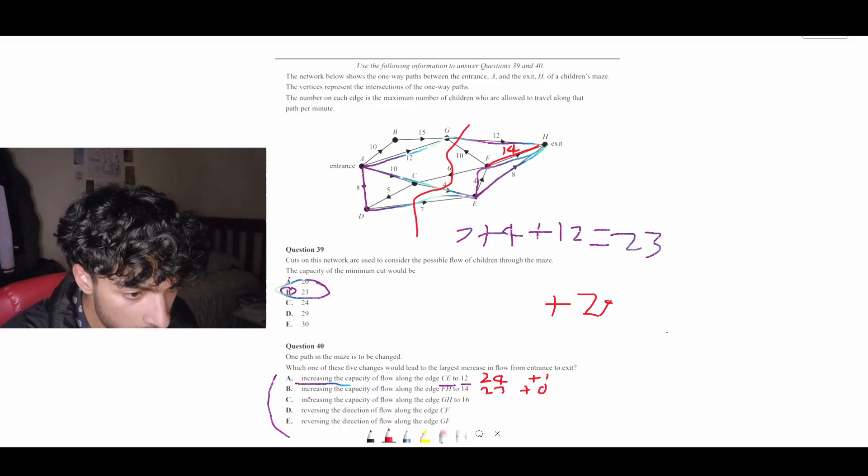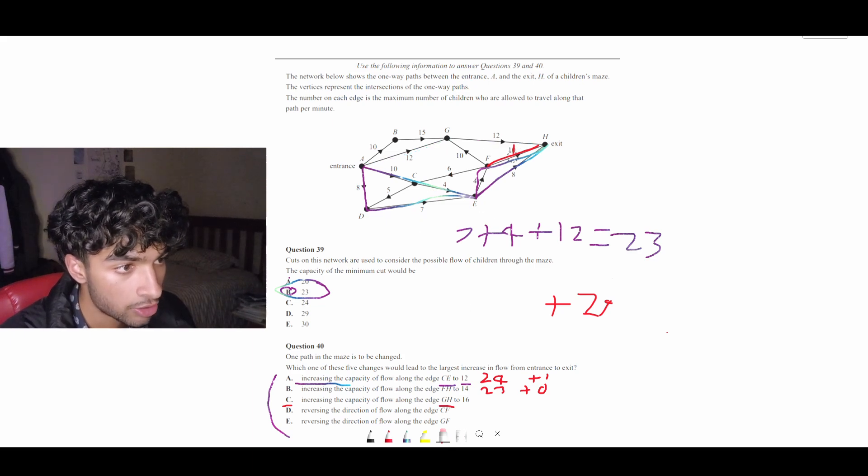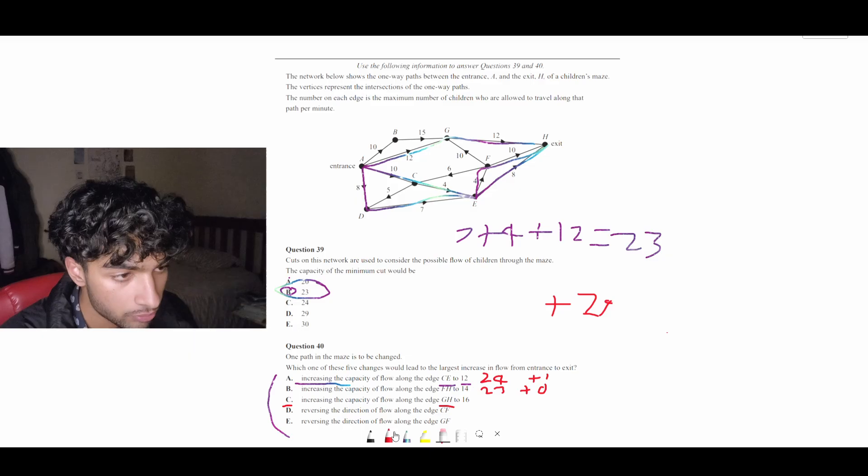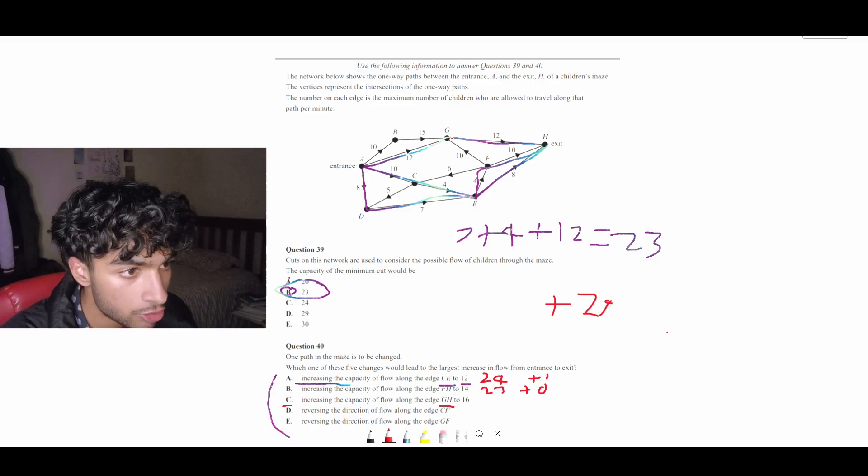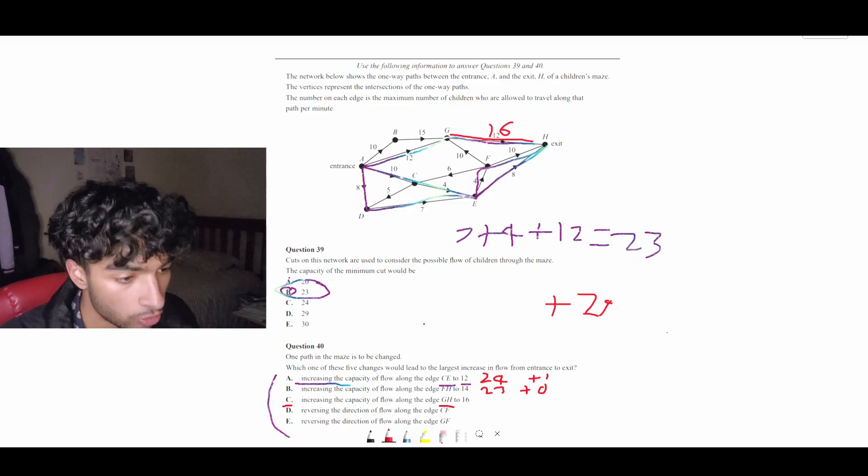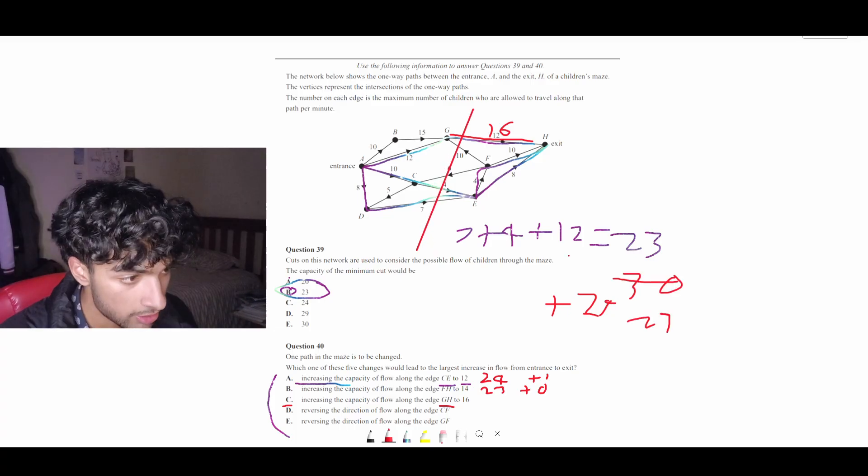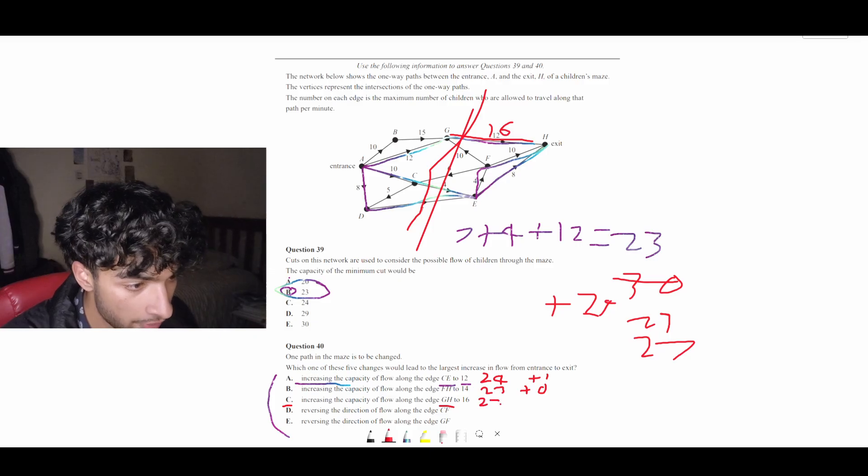And next thing for C is increasing the capacity of flow of GH to 16. So let's check GH to 16. This might actually increase the flow, but I don't think it's going to be dramatic or anything. So let's check 7 plus 4 plus 12, I mean 16. It's 27. So 27, that's an increase of 4.